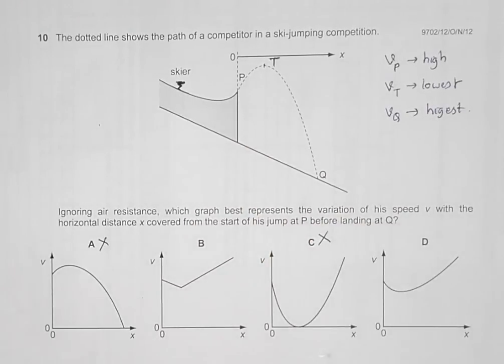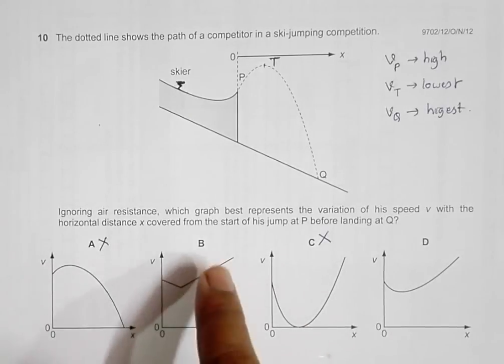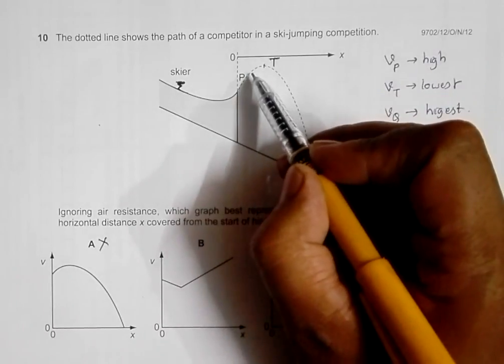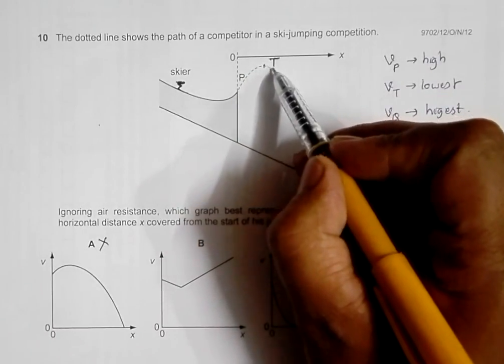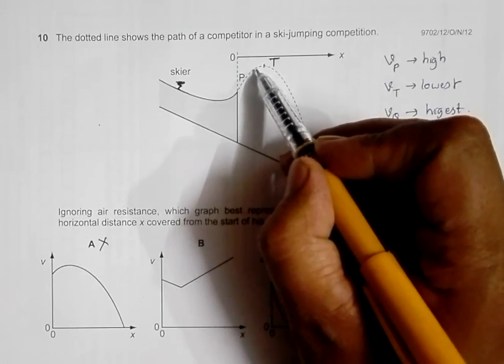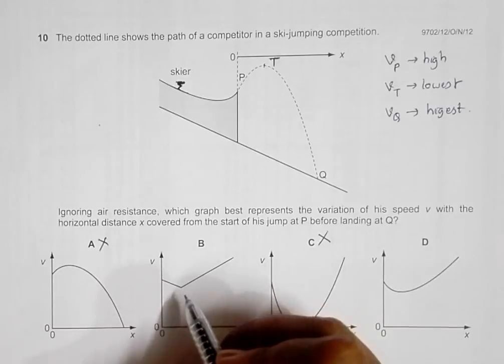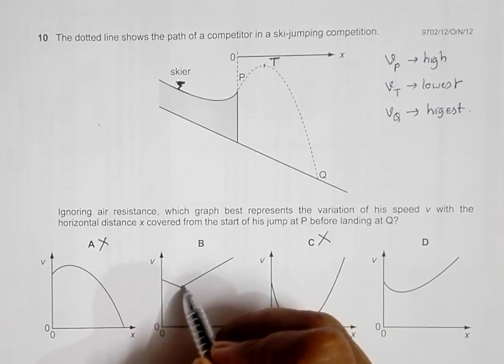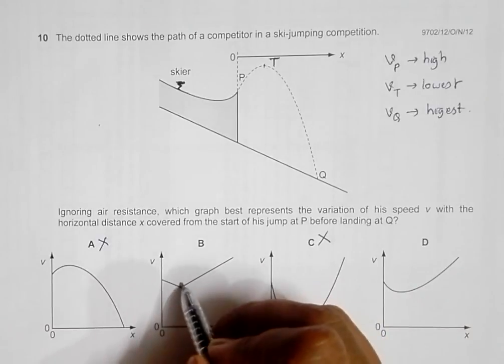Now the remaining choices are choice number B and D. Now if I go through simply the transition of velocity here, it's a smooth transition. That means the velocity does not change with a jerk. So this graph shows that the velocity changes here with a jerk at T. There's just some sort of jerking motion according to the nature of the graph shown here.